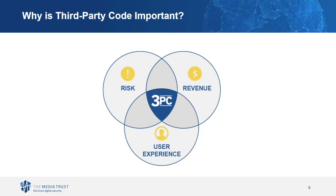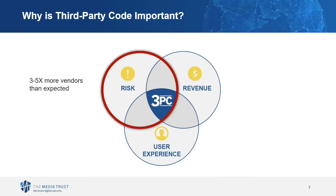The end result is that 90% of the code executing and delivering the website and mobile app experience is from third parties. The enterprise has no insight or control of the client-side execution of this code and is therefore blind to security, data privacy, and performance issues. Third-party code lies at the intersection of risk, revenue, and user experience, and it contributes to a digital attack surface that is three to five times higher than you would expect.